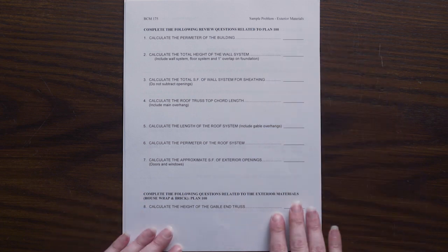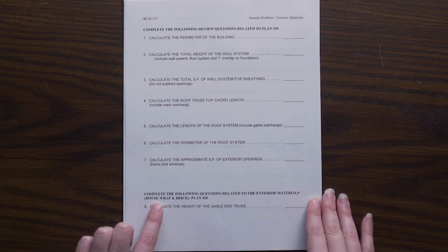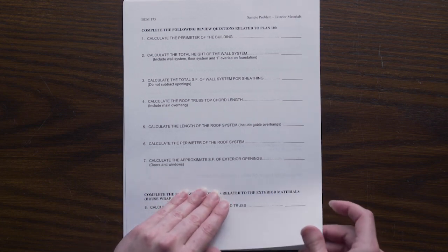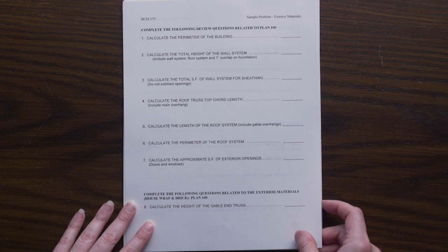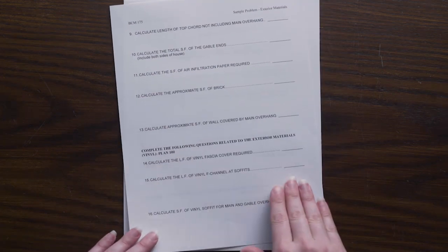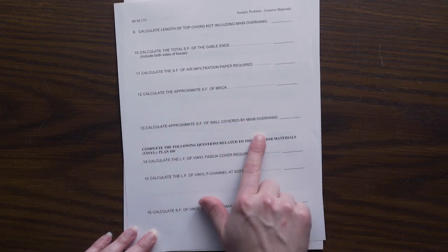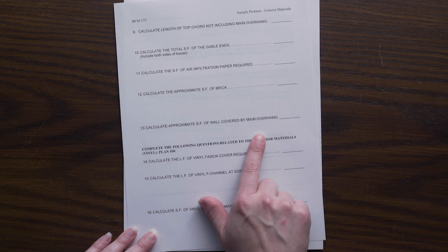So we'll review that in the first problem set. After that, we'll look at some of the other information related to exterior materials, mainly looking at the house wrap that will go on the exterior as well as the square footage of brick that is on our front elevation. And then we will look at what area of our wall is covered by our main overhang.